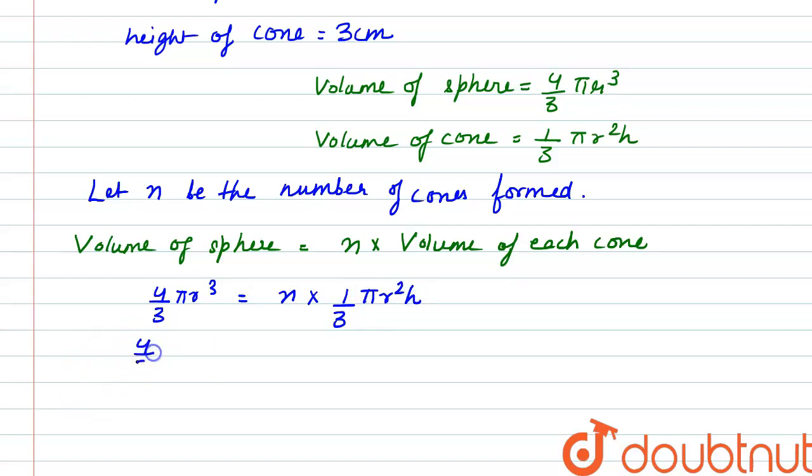So the radius of the sphere is 10.5, so it would be 4 by 3 into pi into 10.5 whole cube is equal to n into 1 by 3 pi r is 3.5 square into 3.